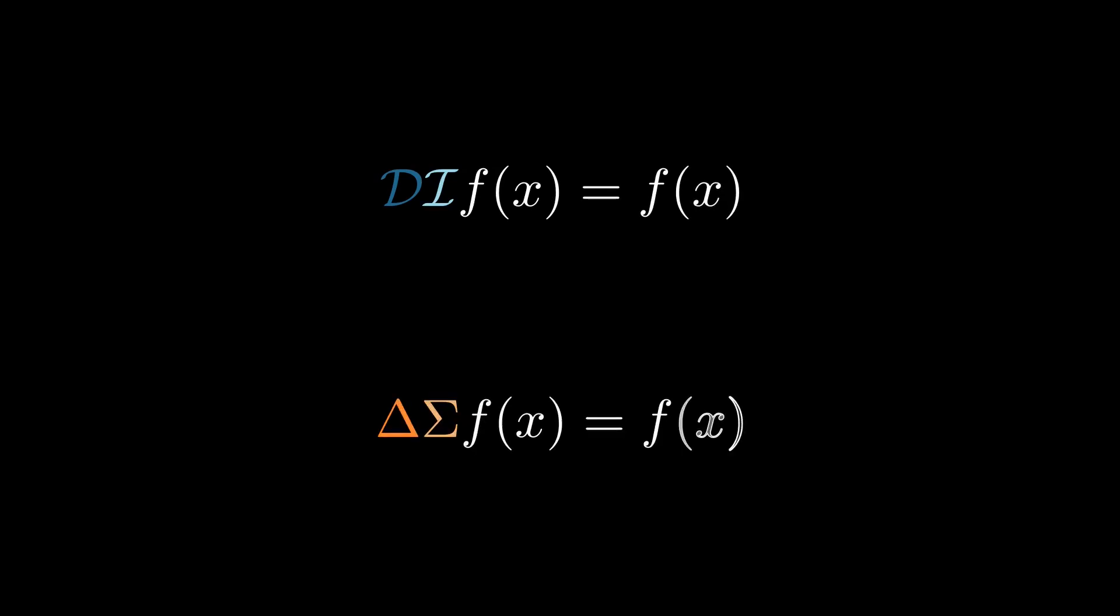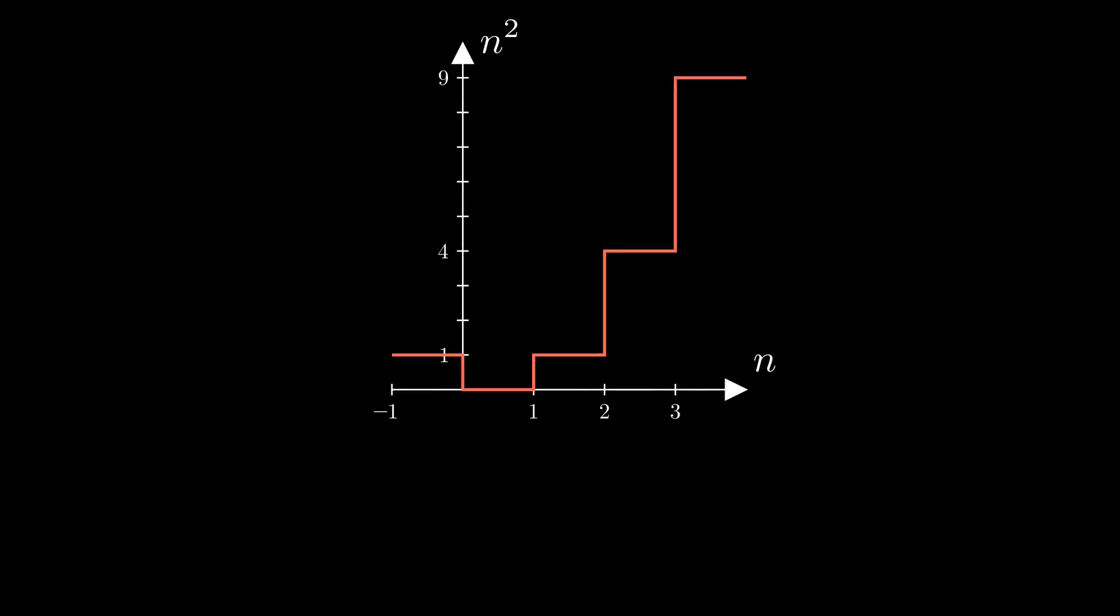Just like in classical calculus, where differentiation is inverse to integration, taking the forward difference is the inverse of taking a sum. We can see this by reframing this observation we made in orange. 9, for example, 3 squared, is equal to 1 plus 3 plus 5.